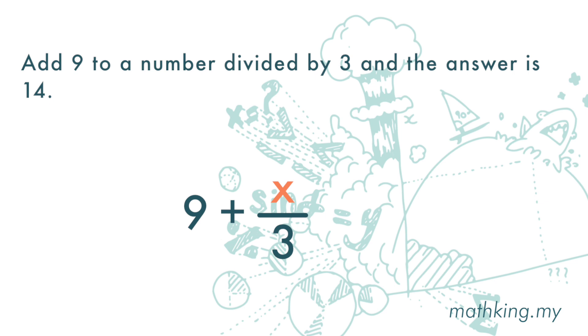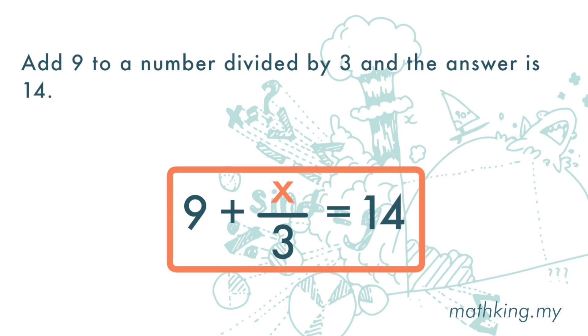The answer is 14, so this is equal to 14. The final equation is: 9 plus x over 3 is equal to 14.